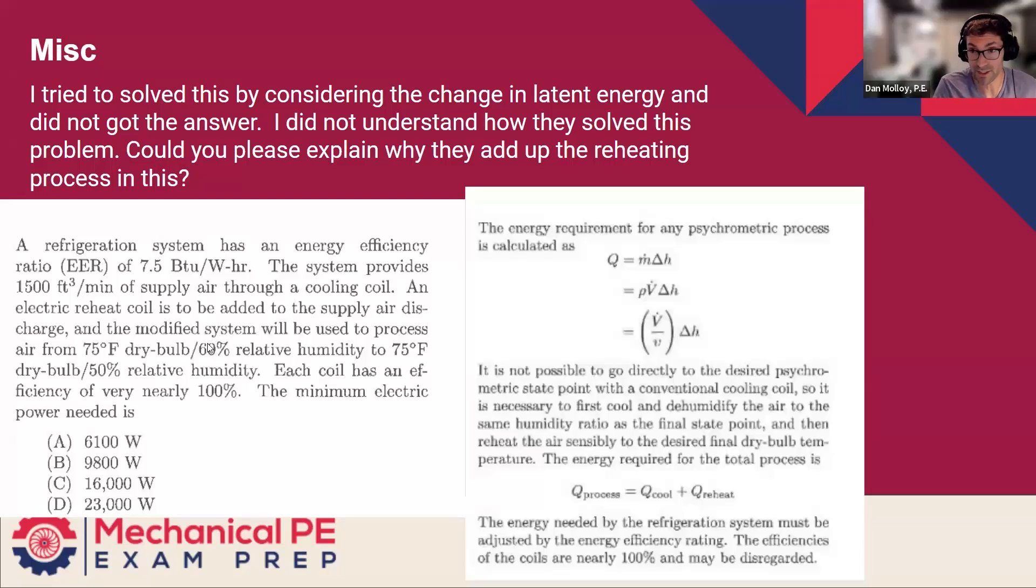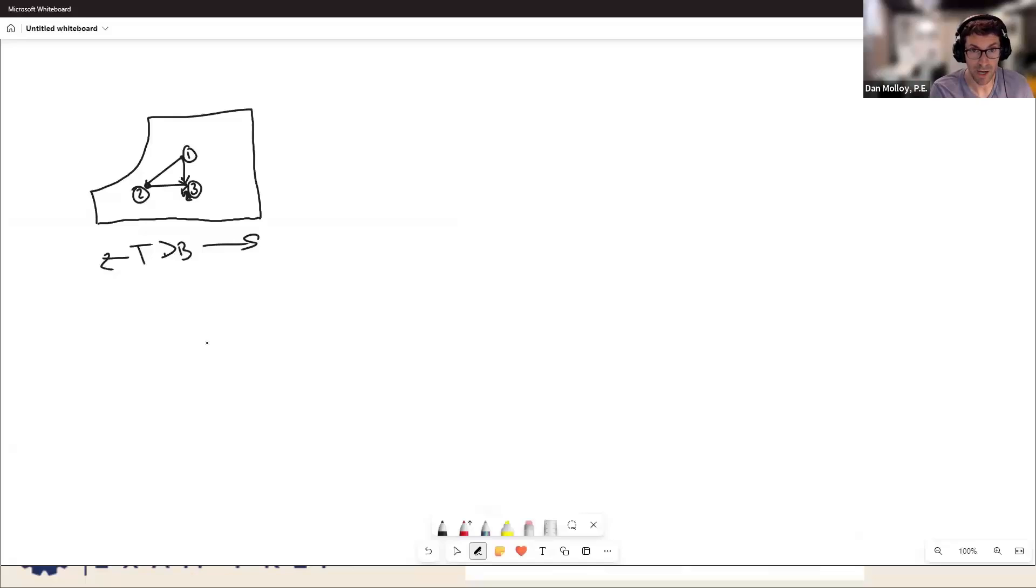So, all right, let me make sure I'm answering the question. I tried to solve this for a change in latent energy. Did not get the answer. Explain why they add up the reheating in this process. Yeah, so the question is the minimum electric power needed. What power is needed? The power to go from one to two, and the power to go from two to three. The power to go from two to three, let's do that first, because that's actually the easier of the two numbers.